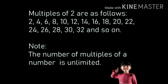Let's have one more example. Multiples of 2 are as follows: 2, 4, 6, 8, 10, 12, 14, 16, 18, 20, 22, 24, 26, 28, 30, 32 and so on. The important point to be noted is that the number of multiples of a number is unlimited.